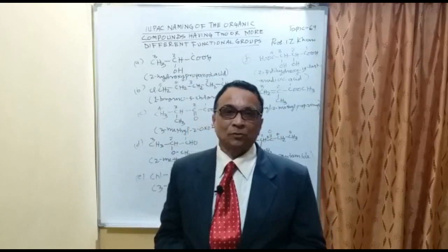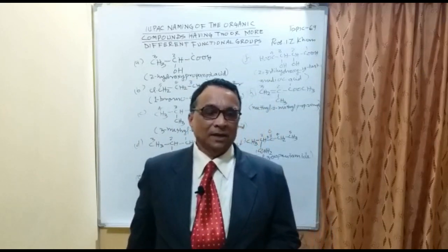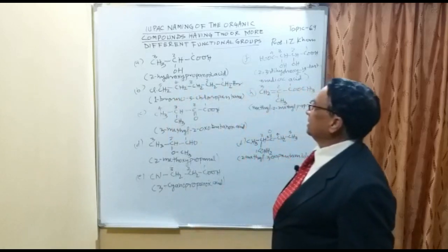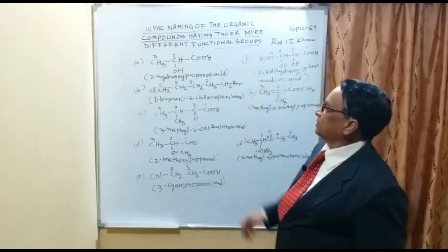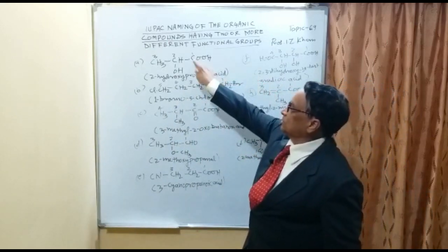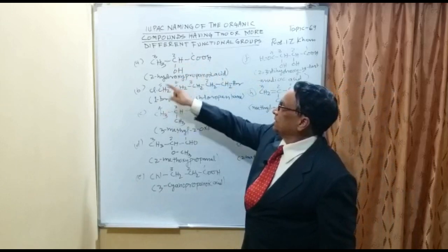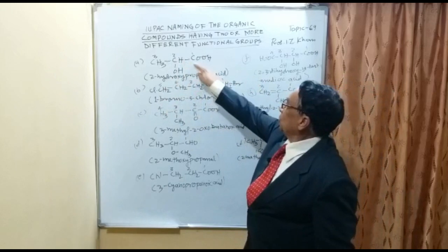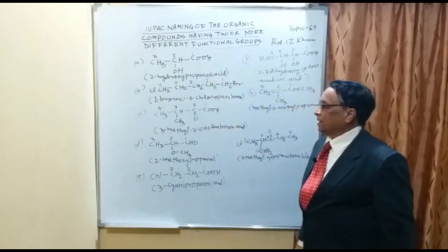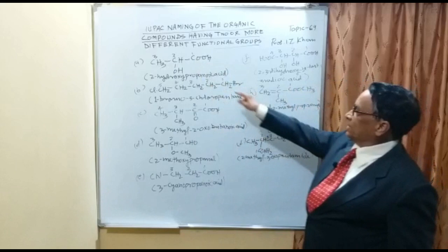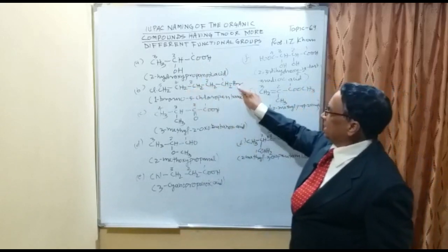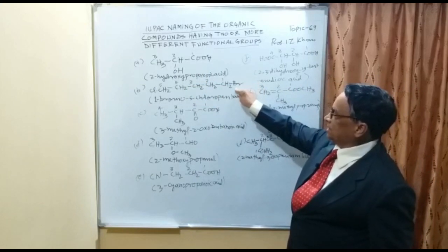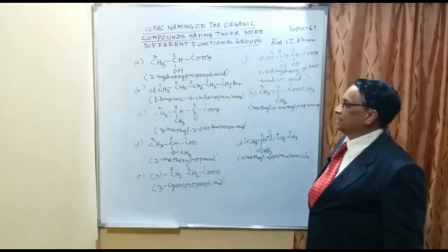In continuation, here are more examples of how different functional groups are named according to IUPAC nomenclature. In example A, there are 3 carbon atoms and at position 2 there is a hydroxy group, giving 2-hydroxypropanoic acid. In example B, the numbering goes 1 through 5; at carbon 1 there is bromine and at carbon 5 there is chlorine.